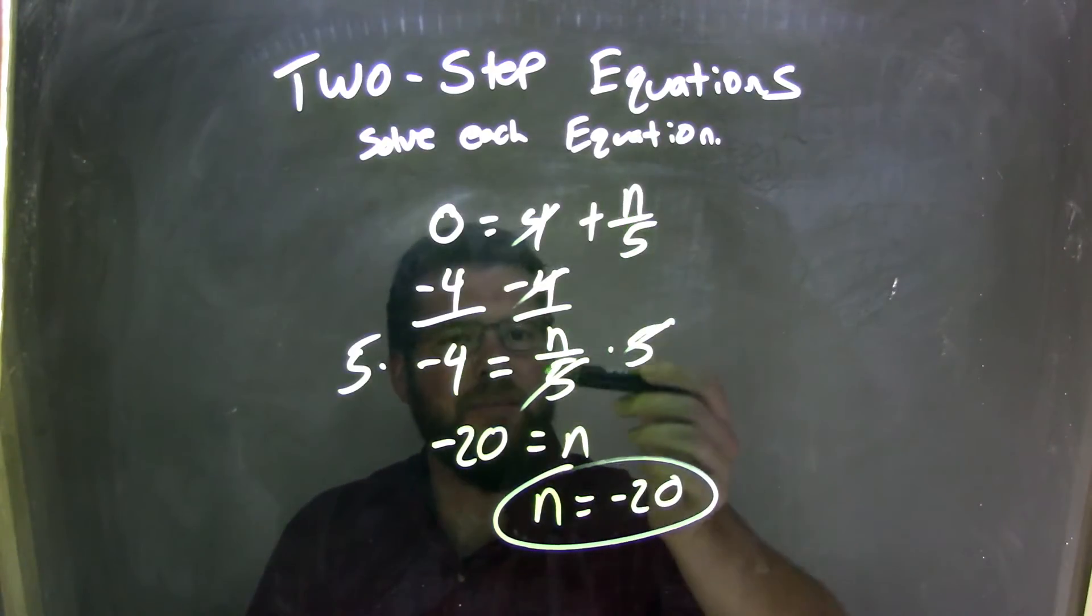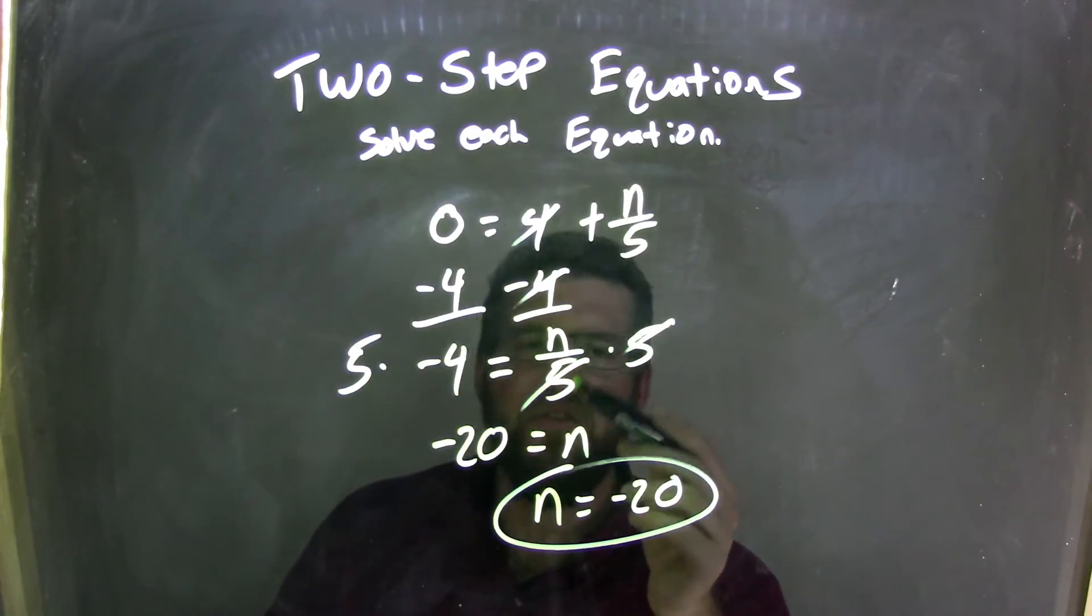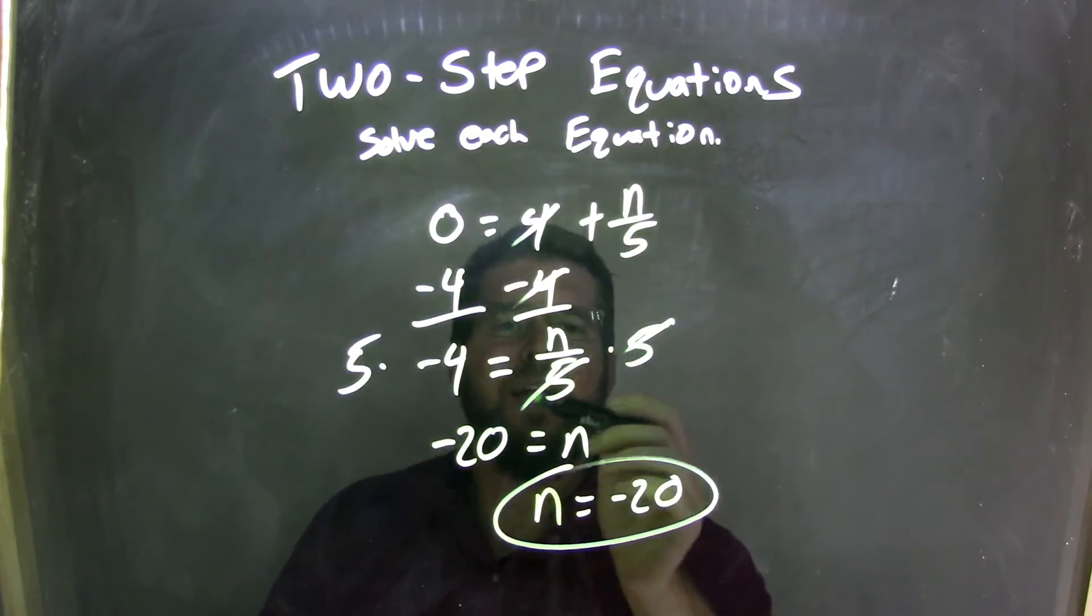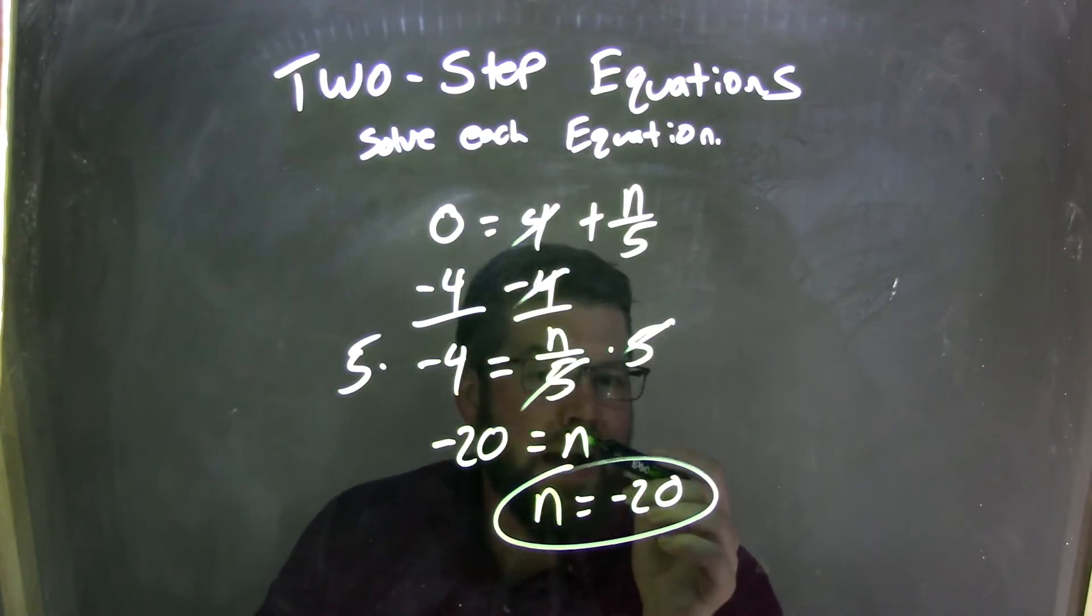And then I brought down the n over 5. n divided by 5, opposite of division is multiplication. So, I multiplied 5 to both sides. Cancel the 5s here, and I had 5 times negative 4, which is negative 20. And that equaled my n.